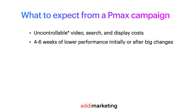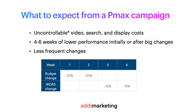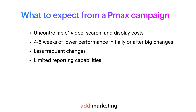Expect several weeks of lower performance initially or after big changes in the campaign. This is called the learning period, when the campaign collects and analyzes conversion data. To minimize the learning period, make your changes smaller and less frequently. For example, to change a budget, make changes once a week and not more than 20%. The same goes for bidding. Also, Pmax has limited reporting, which may not be an issue for smaller accounts, but for bigger accounts it becomes really important to control everything, and Pmax is not the best in this case.